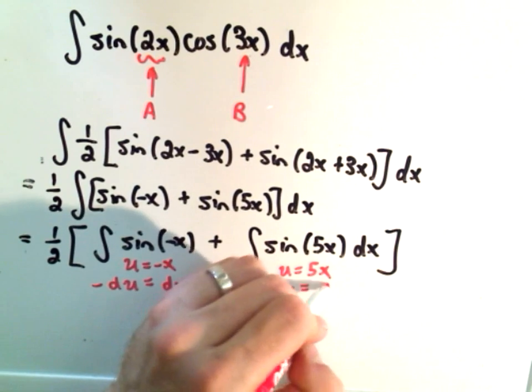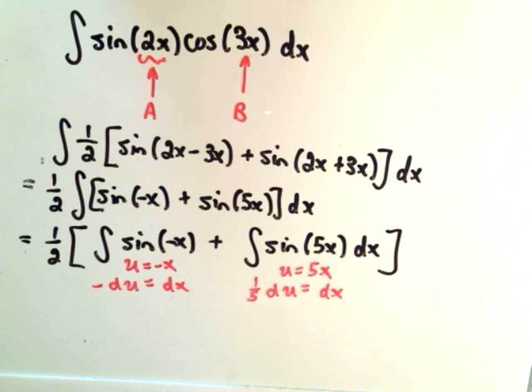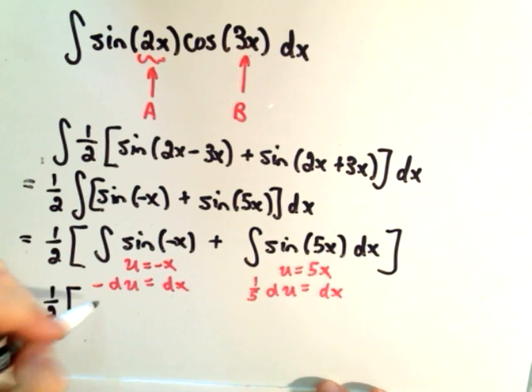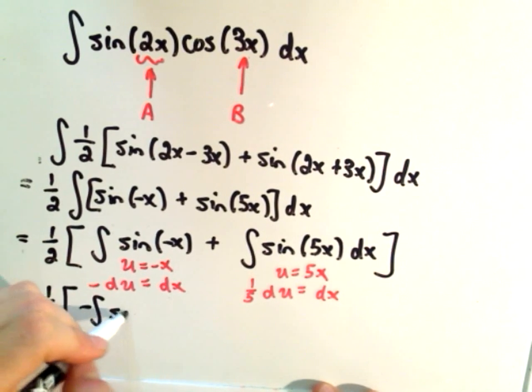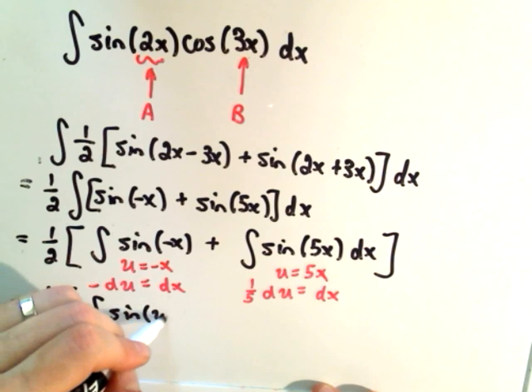If we divide by 5, we'll get one-fifth du equals dx. Maybe I shouldn't use u's repeatedly, maybe I'd get confused, but I think I'll be okay.